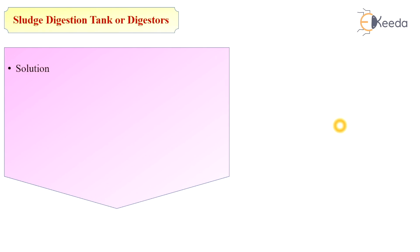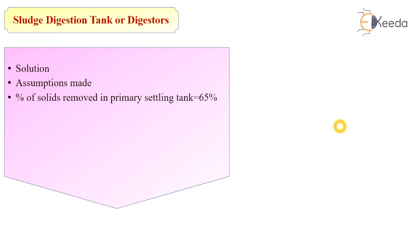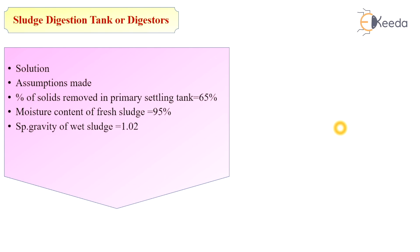Before starting the actual design, we make the following assumptions: percentage of solids removed in the primary settling tank is assumed as 65%; moisture content of fresh sludge is 95%; specific gravity of wet sludge is 1.02; digestion period is 30 days; depth of the digestion tank is 6 meters. These are the assumptions made while designing the digestion tank.